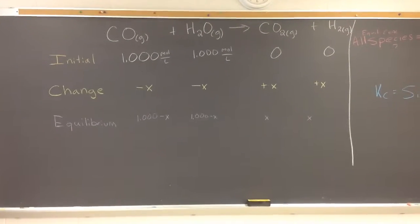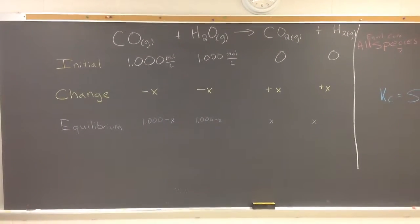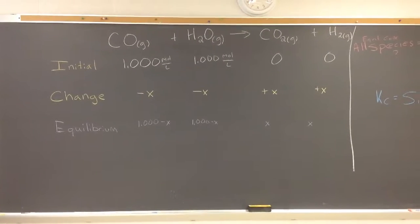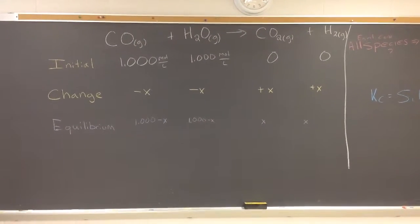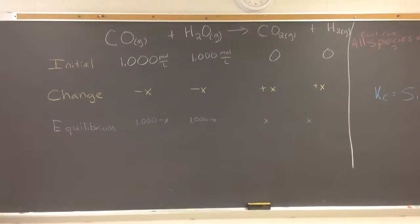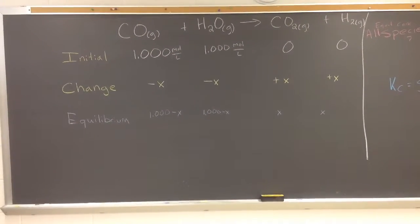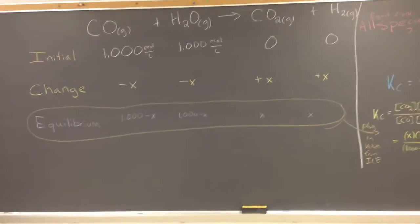If that's different, then we've got to multiply by that value. So then our equilibrium is simply the change minus or plus the initial plus the change. So in this case, one minus X, one minus X, and X and X for each of those. So now we're going to set up the equilibrium constant expression or law of mass action, and then we'll fill in these values, and I'll show you how we do that.